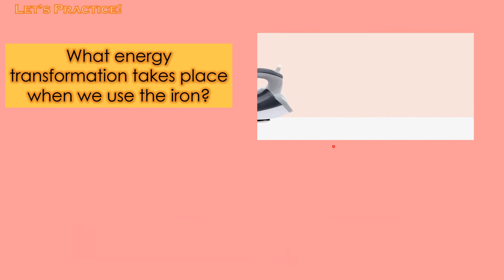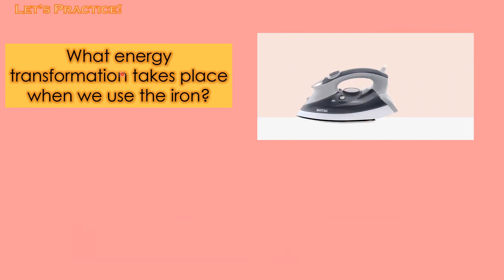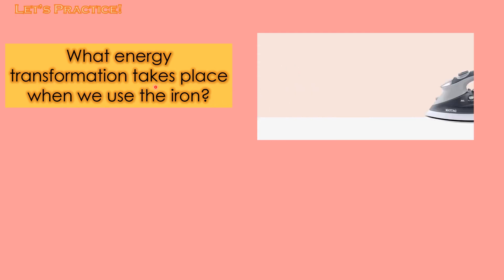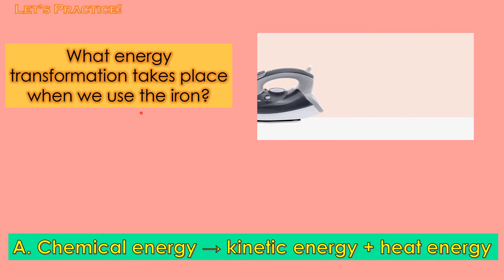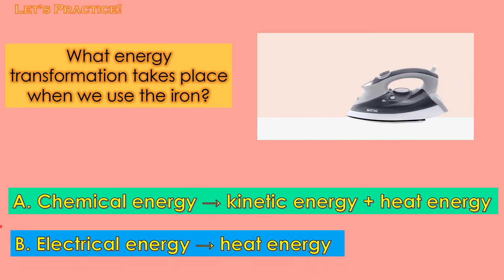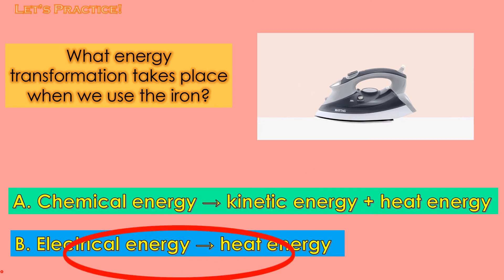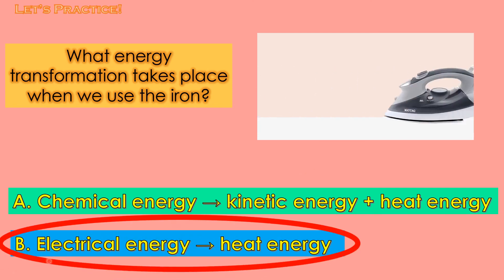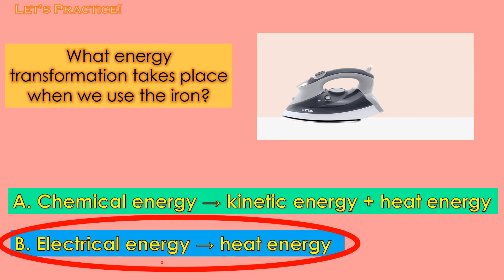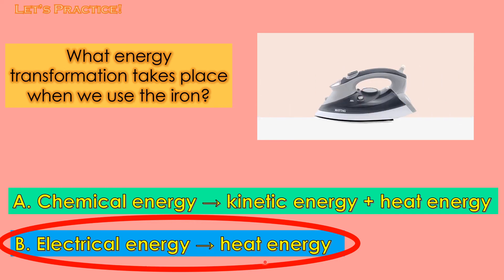Look at this one — this is an iron. What energy transformation takes place when we use the iron? A or B? One, two, and three. The correct answer is B. Electrical energy transforms into heat energy.